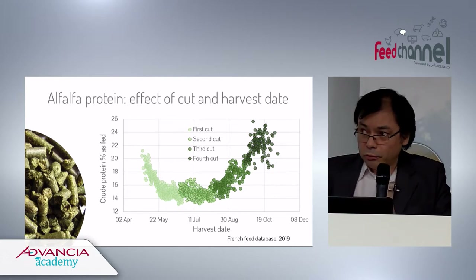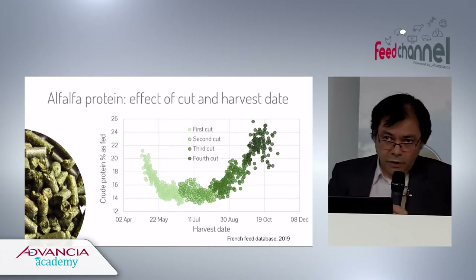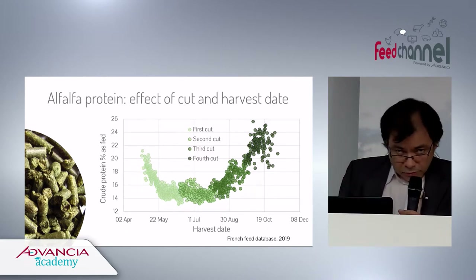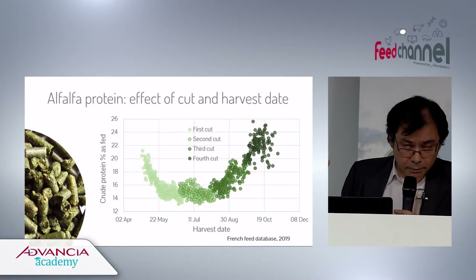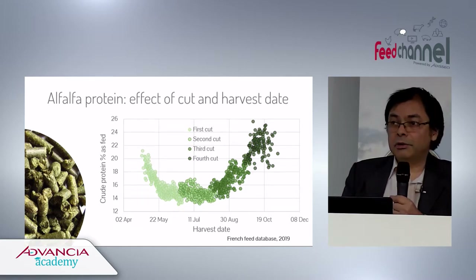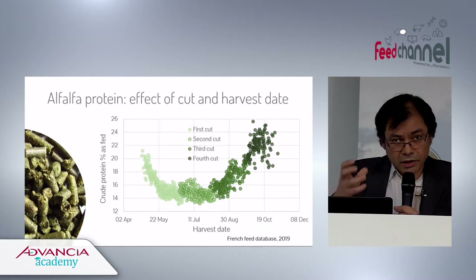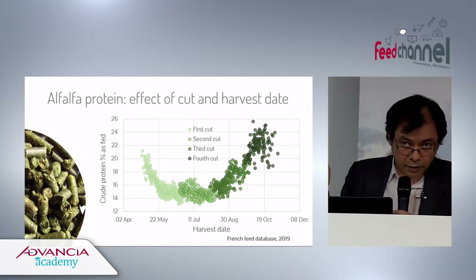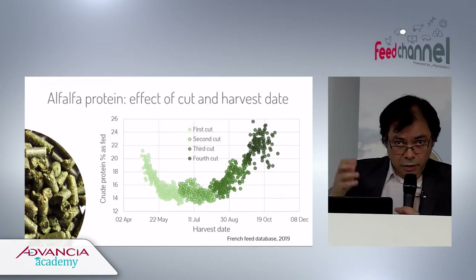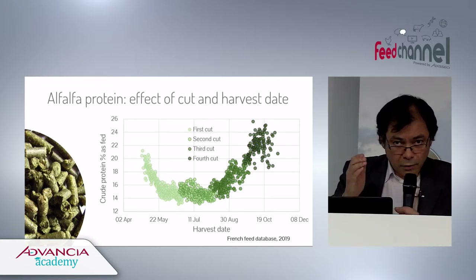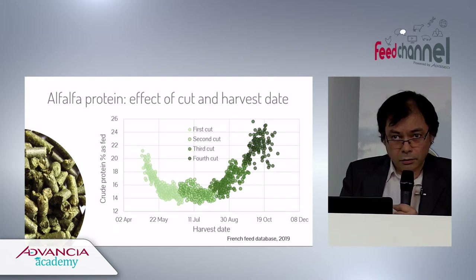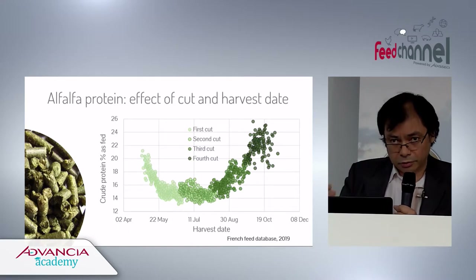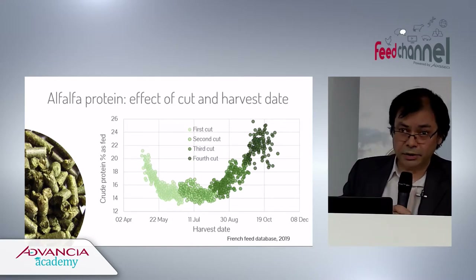The producers of this alfalfa are from the eastern part of France, also known for champagne production. Just as champagne producers assemble different vintages, these growers assemble different alfalfas to create precisely categorized versions — 17%, 18%, or 19% protein — by buffering the natural variability.